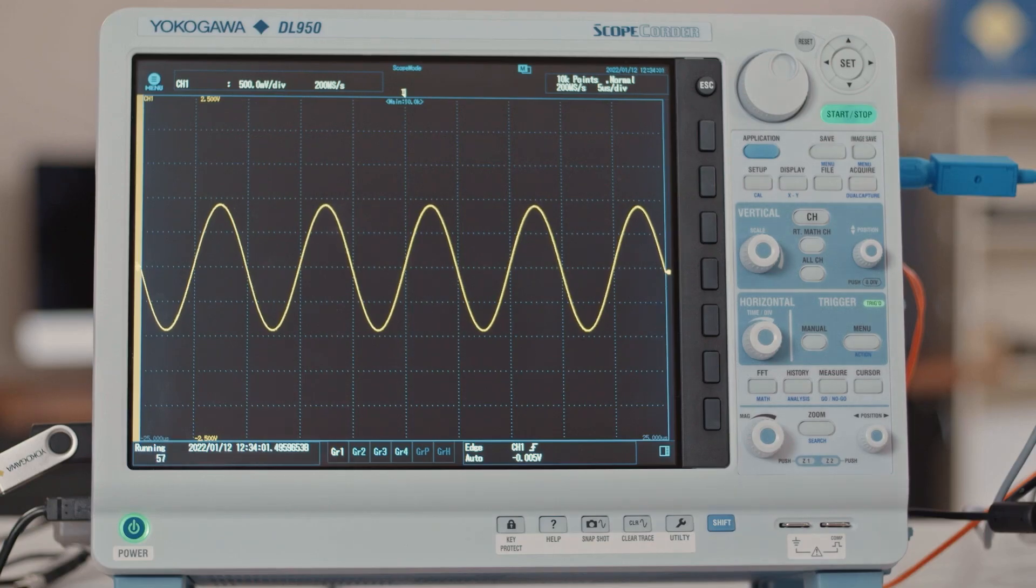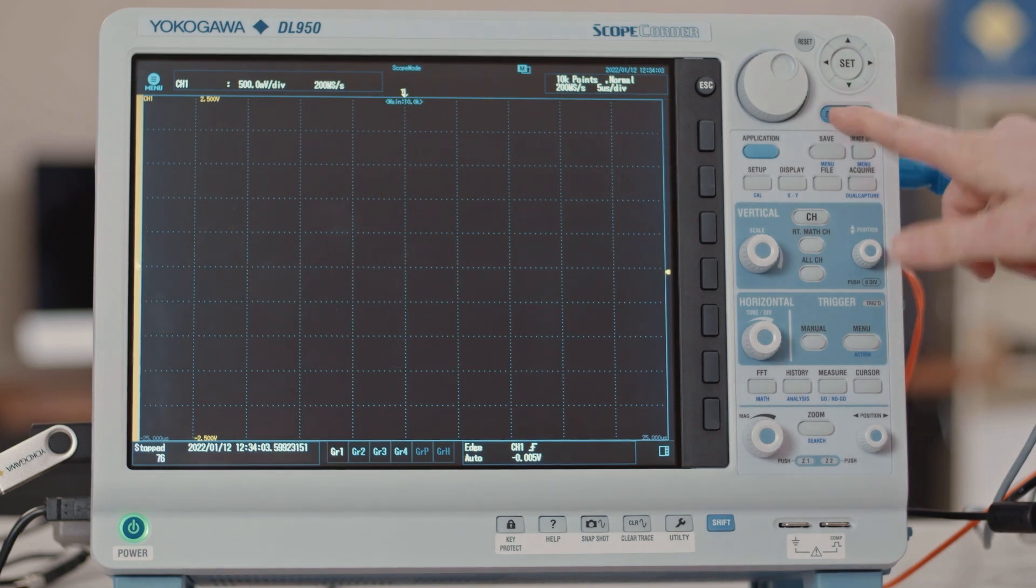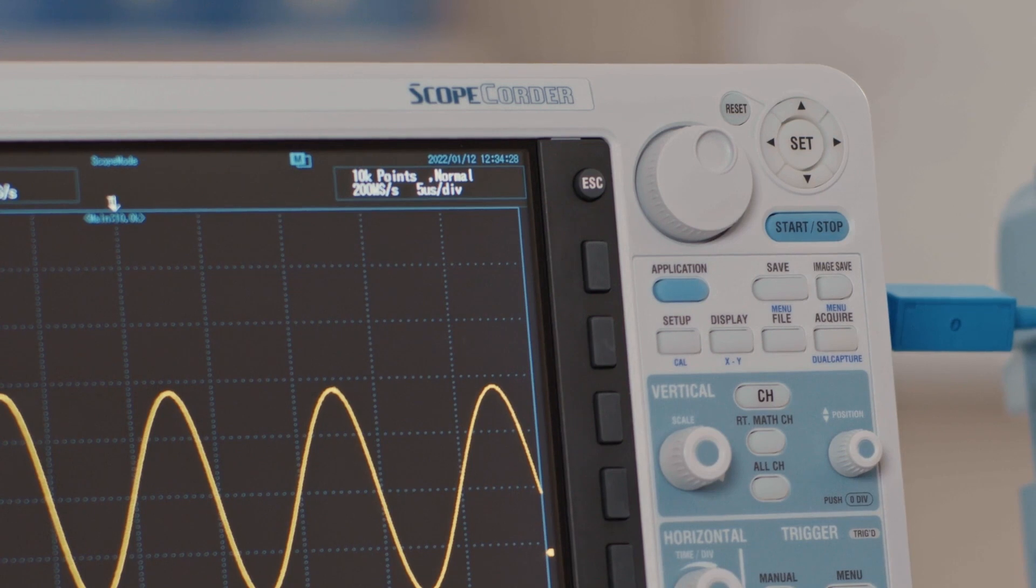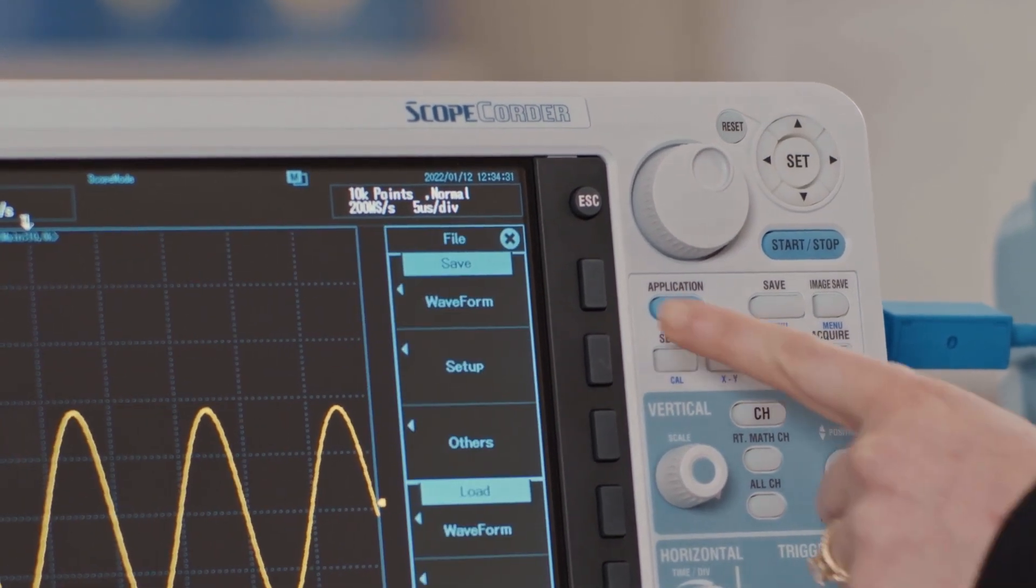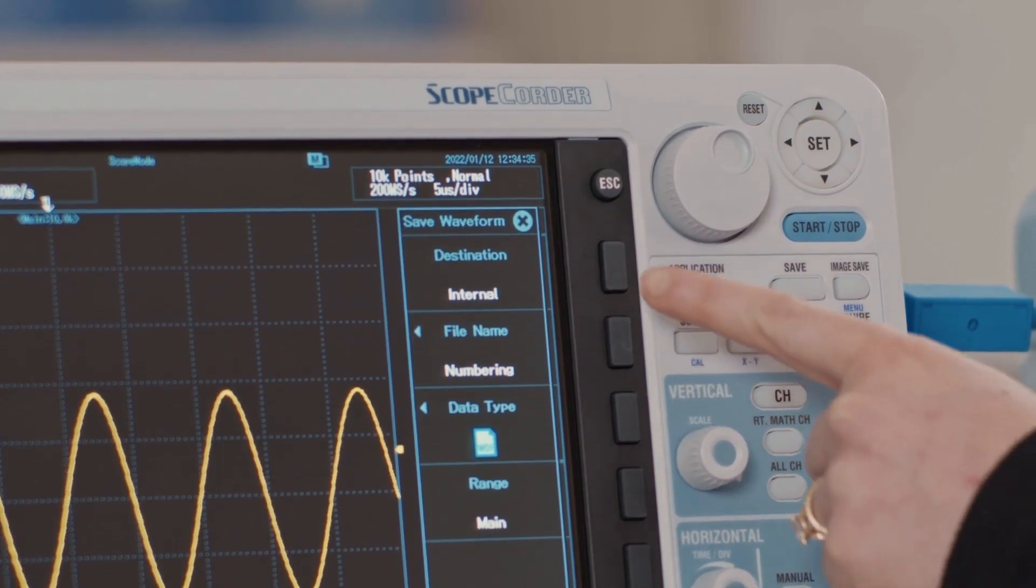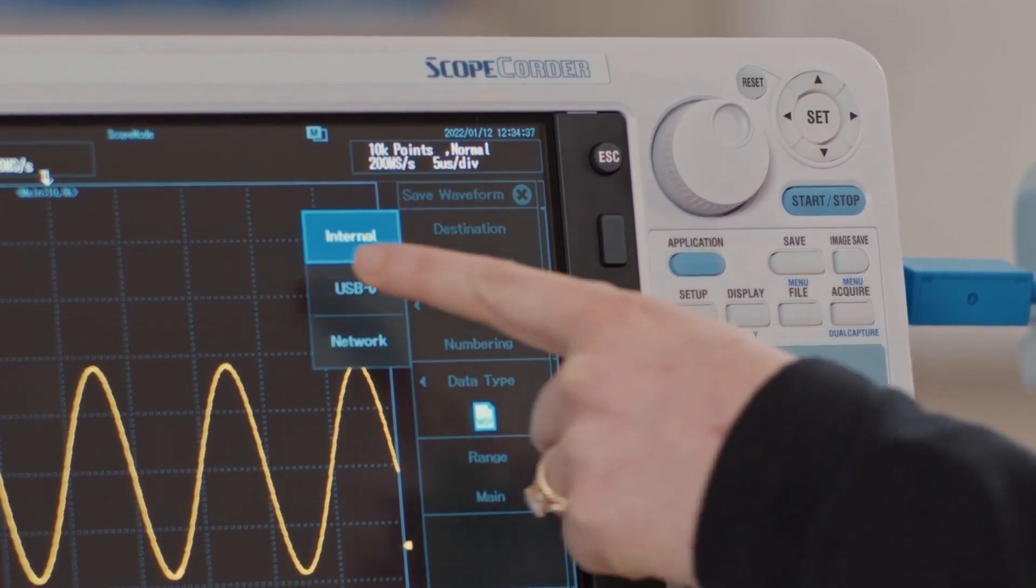After the recording is complete, you can save waveform files individually on each DL950. To do this, press File. Under Save, press Waveform. Press Destination and select the save destination.